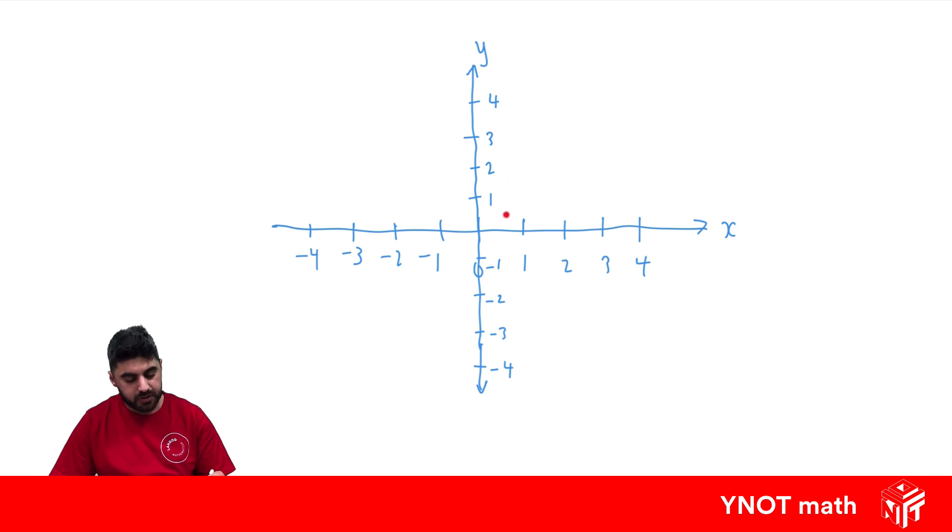So here we can see we split it up into four sections and we call these quadrants. This is the first quadrant, this is our second quadrant, our third quadrant, and our fourth quadrant.